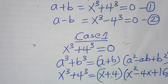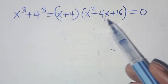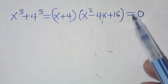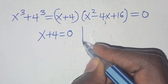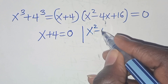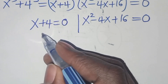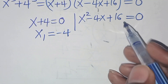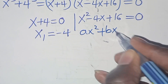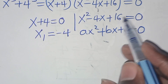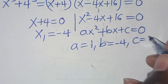This gives us two parts: x + 4 = 0, and x² − 4x + 16 = 0. From the first part, x₁ = −4. For the quadratic equation x² − 4x + 16 = 0, which is in the form ax² + bx + c = 0, the coefficients are: a = 1, b = −4, and c = 16.